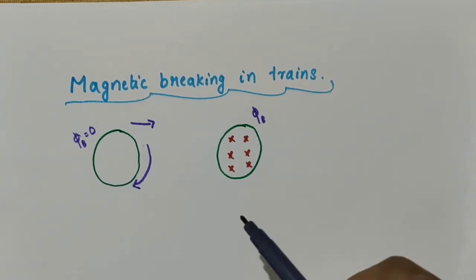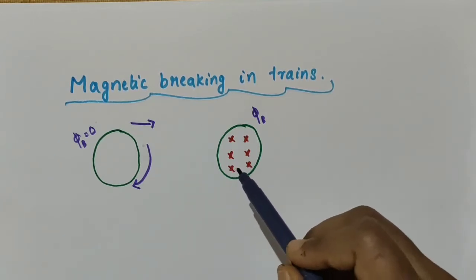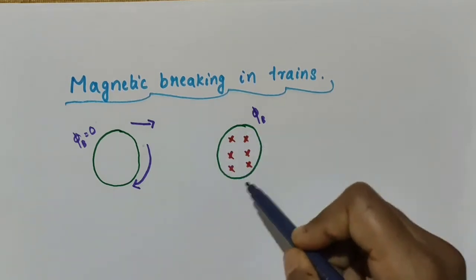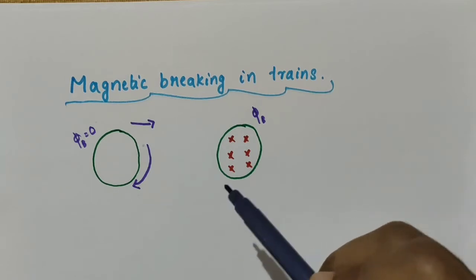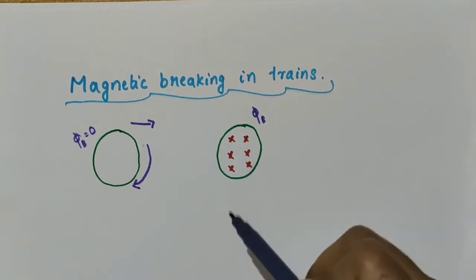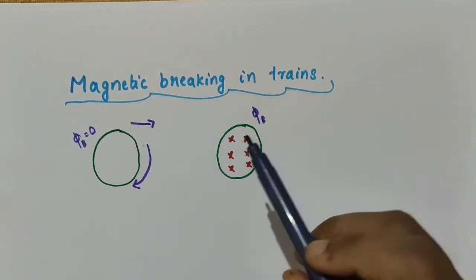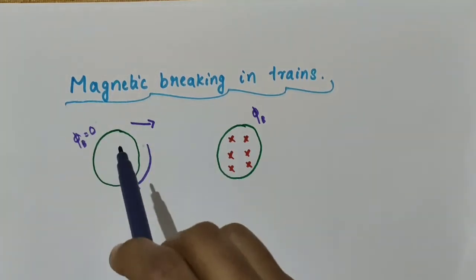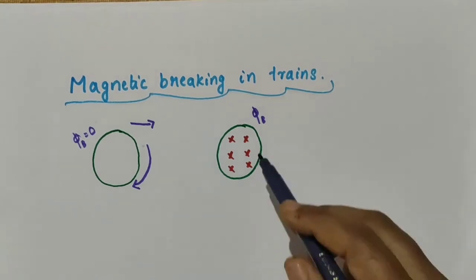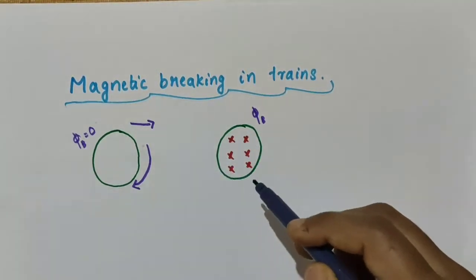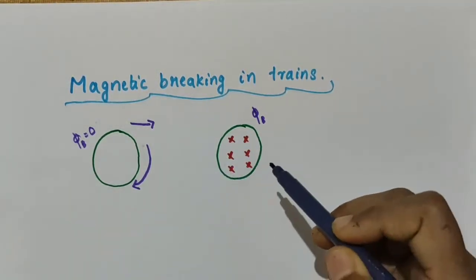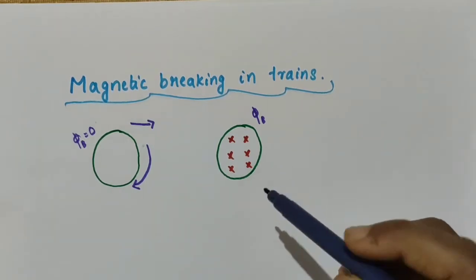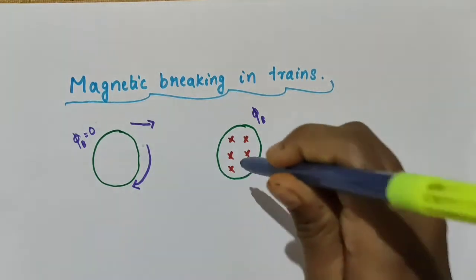According to Faraday's law of electromagnetic induction, some induced current — that is, eddy current — will be induced in this wheel. It will be induced in such a direction to oppose that increase in flux, because the flux has increased from zero to some value. So eddy currents will be induced in this wheel of the train to oppose that increase in flux.